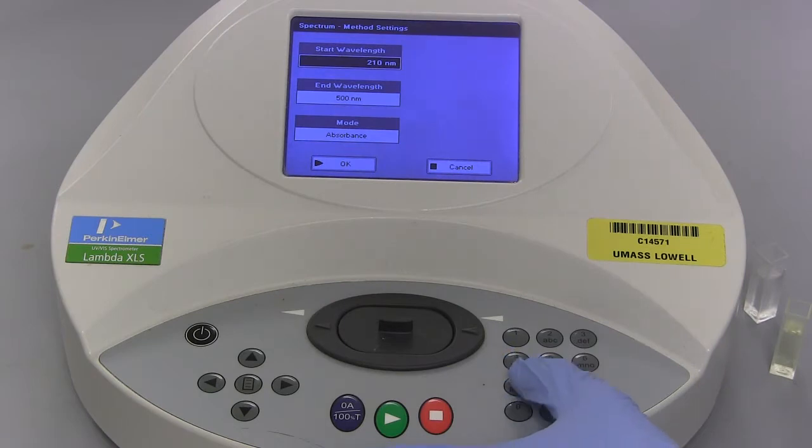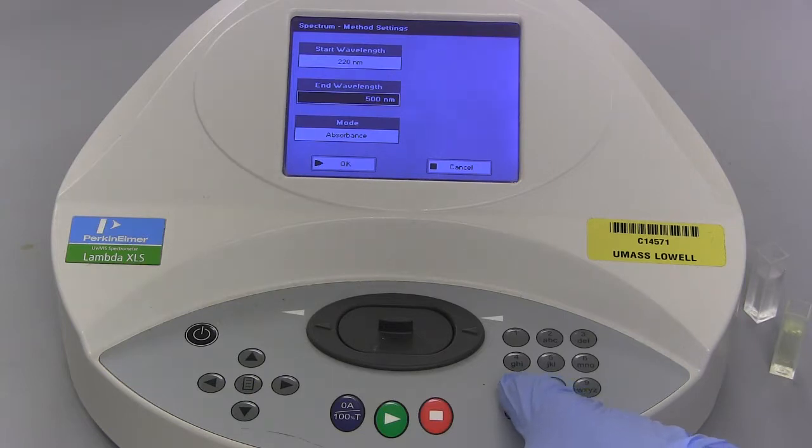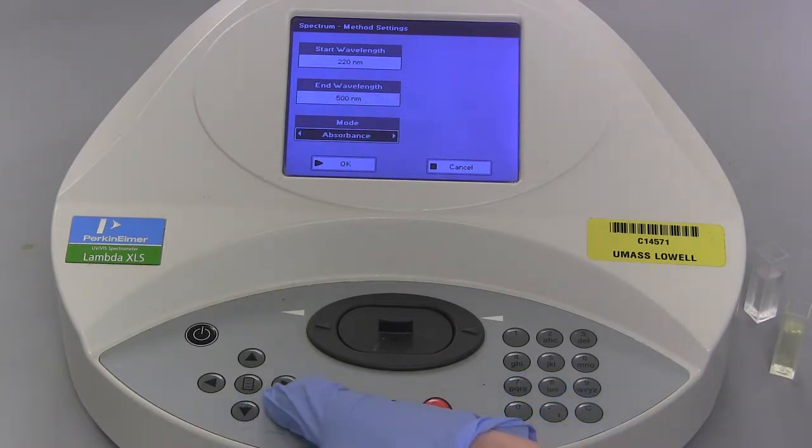Select the start wavelength and with the keypad input 220 nanometers. Press the down arrow key to select the end wavelength and set it to 500 nanometers. Select the mode with the down arrow key and with the left or right arrow keys select absorbance.